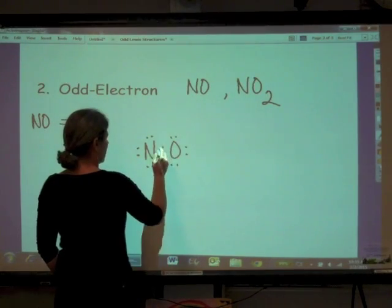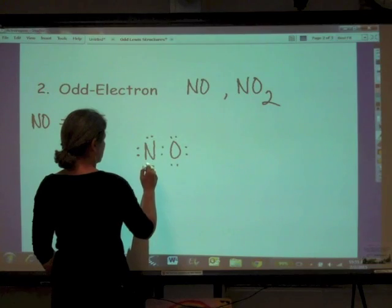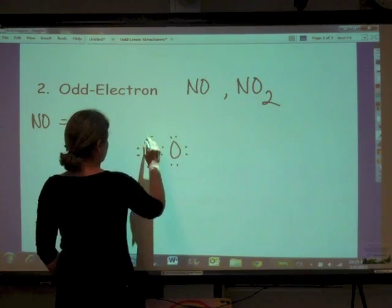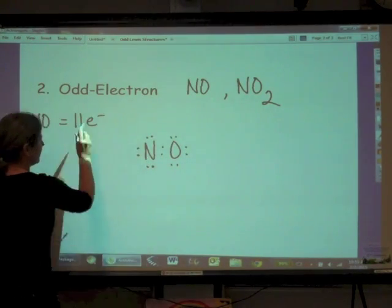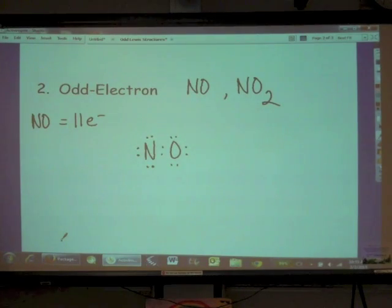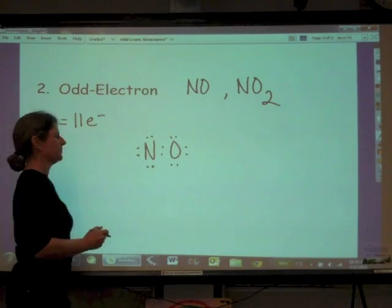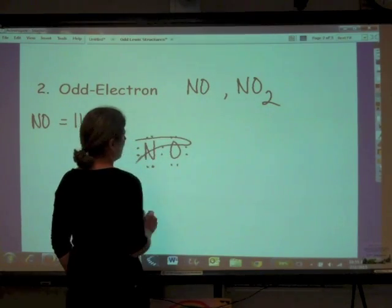Two, four, six, eight. Two, four, six. Two, four, six, eight. Ten, twelve, fourteen. And we only have eleven electrons to account for. So we've got way more valence electrons than are there in that compound.